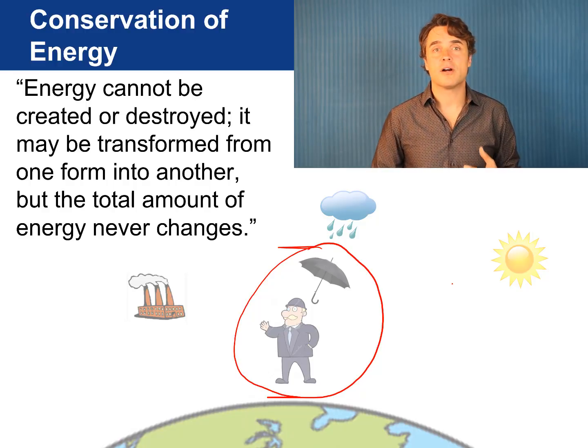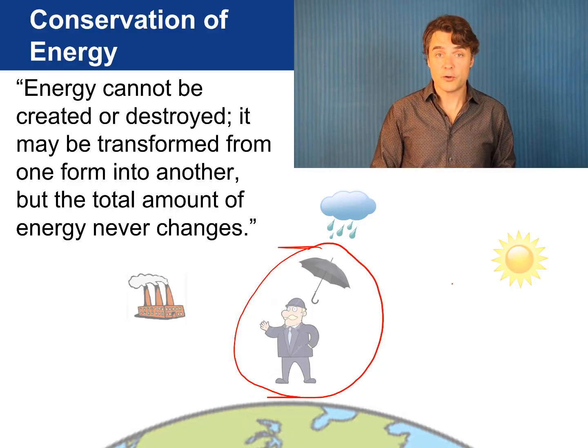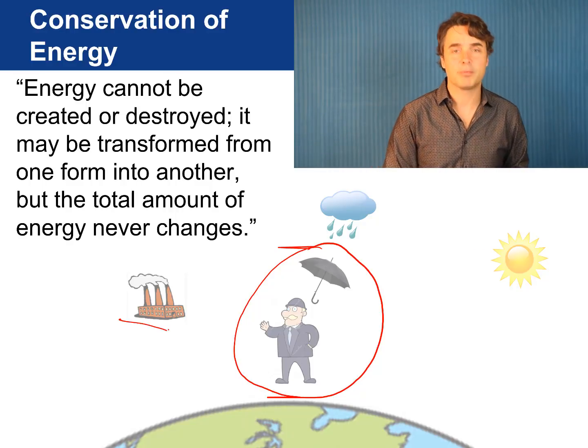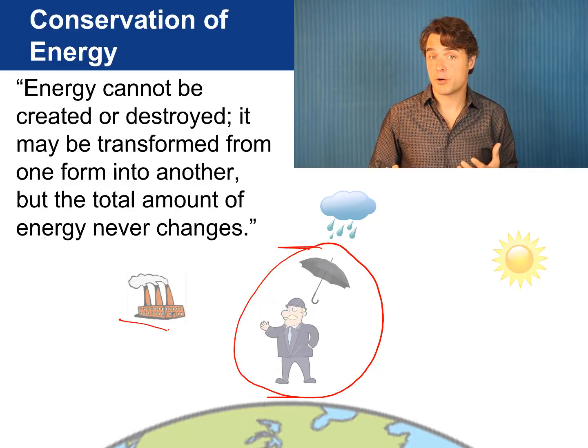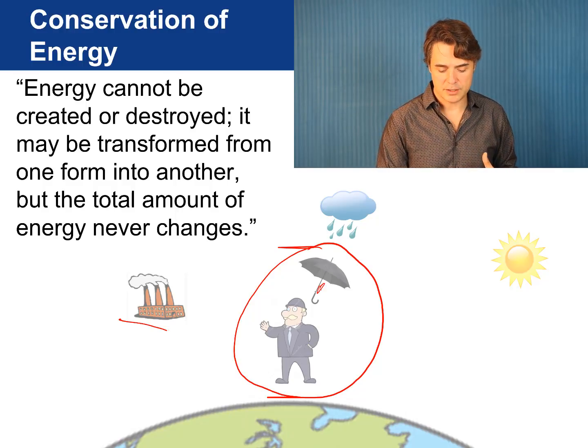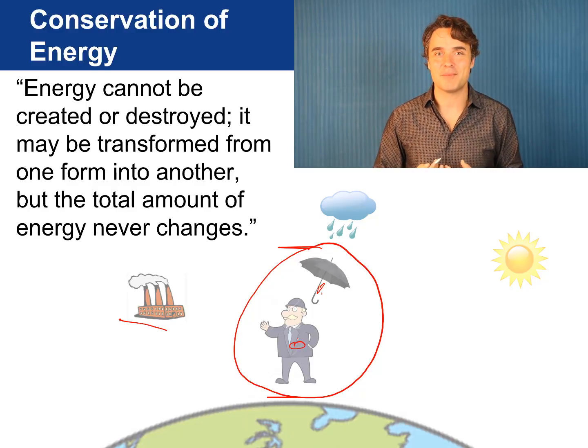By this definition everything outside that system is called the environment. And out in the environment are all these other things like the clouds, the Sun, the Earth below, and this power plant over here. Within the system there can be different forms of energy like maybe the springs inside this umbrella or the chemical energy inside the food in this guy's stomach.